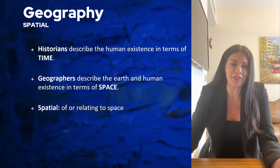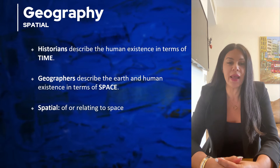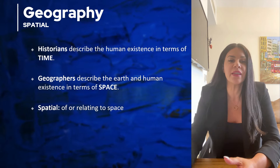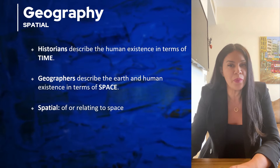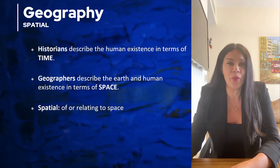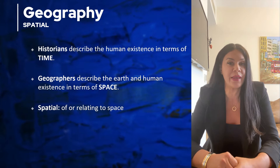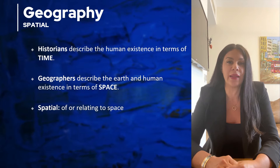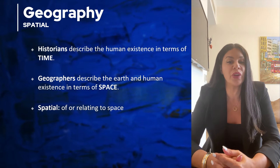So how does this differ from history? Historians and geographers look at the world in a different way. Historians tell a story of the earth and its people in terms of time — dates are important in history. Geographers, however, tell a story of the earth and its people in terms of space or spatial relationships. Geographers look at what happened based on the spatial relationships between people and the environment.